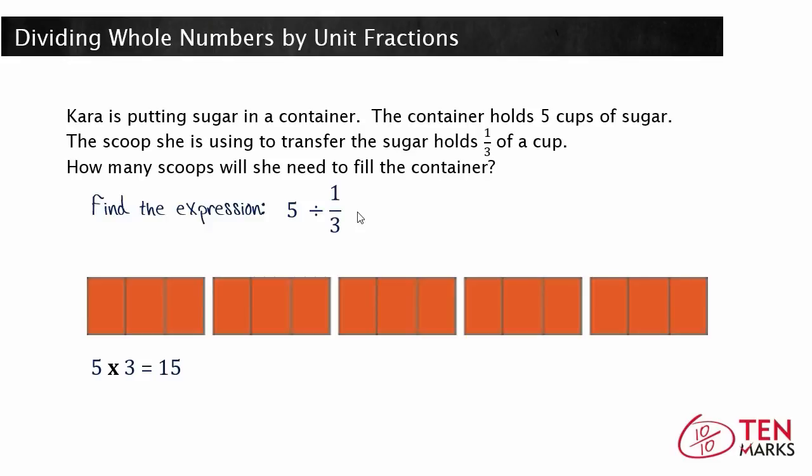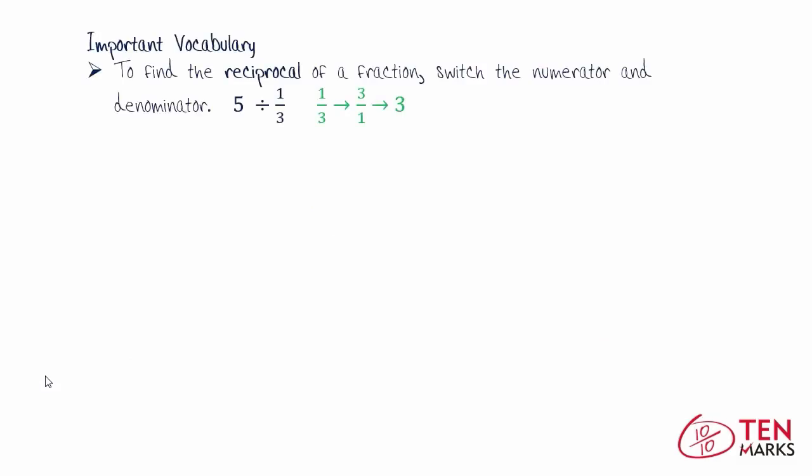But how does five divided by one-third change into five times three? In order to understand this, you need to first know what the word reciprocal means. To find the reciprocal of a fraction, you switch the numerator and the denominator.